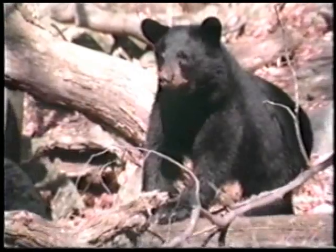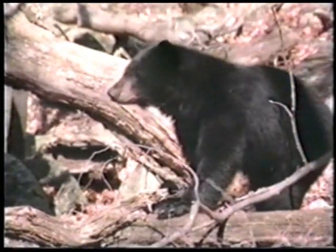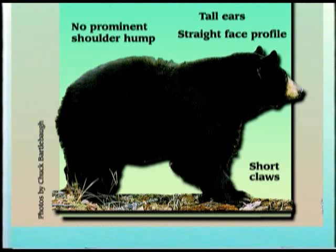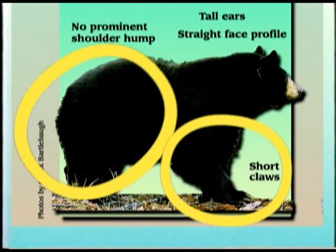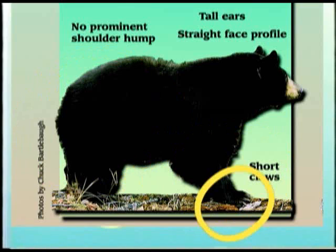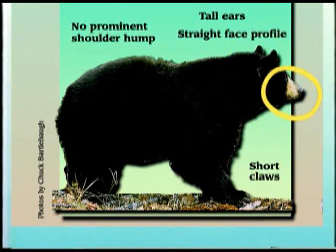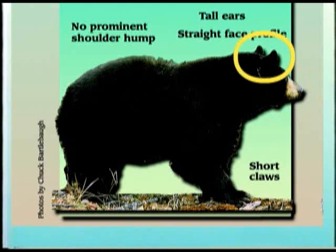The black bear is the smallest and most widely distributed of the three North American bear species. It's compact and heavily structured with relatively massive legs and feet. Each foot has five recurved claws about one inch long that are non-retractable. The head is moderate in size with a rather straight facial profile. The nose is tapered with long nostrils, which help the black bear smell food and detect approaching danger.